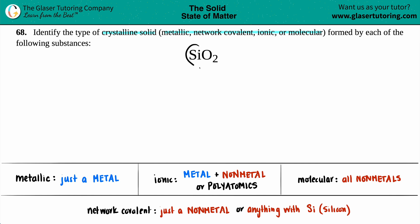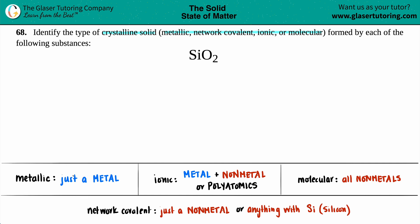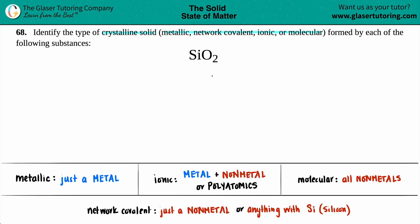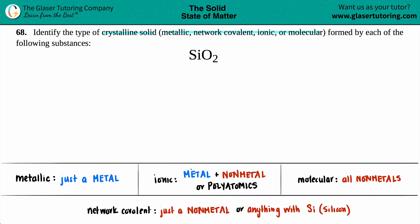Metallic crystalline solids are just a single metal. In this case, SiO₂ — I don't see a single metal. Something like Cu (copper) or Na (sodium) by itself would be metallic, so we can rule that out.